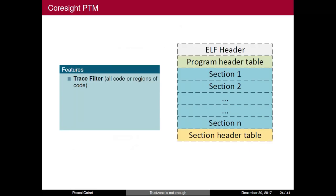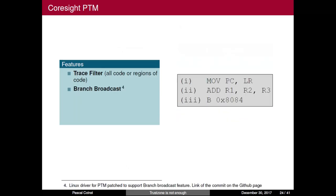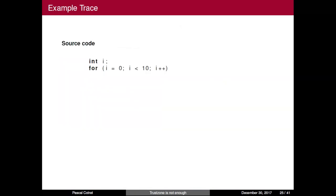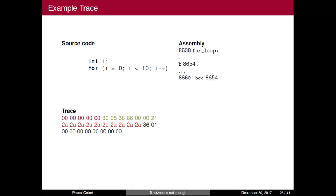The PTM can trace whatever you want in memory — for instance, all code sections (the blue sections), or just a specific region of code. You can say: trace only section one, section two, or section N. The PTM is also able to do branch broadcasting, which was not present in the Linux kernel — we submitted a patch that was accepted to manage branch broadcasting in the PTM. It can also do timestamping and other operations to store information in the traces.